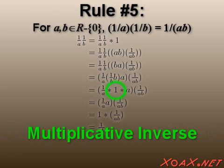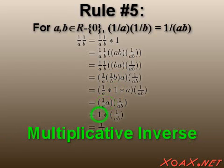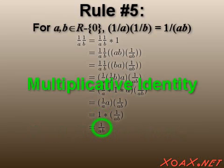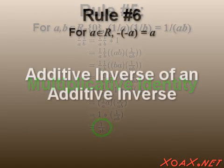Then multiplicative inverses. We eliminate the one via multiplicative identity. Then we use multiplicative inverses again. Finally, we finish off the proof with the multiplicative identity.